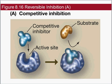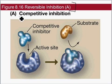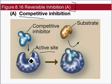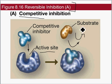For reversible inhibitions — ways to inhibit enzymes temporarily that can be reversed — the first type is competitive inhibition. It's called competitive because an inhibitor competes for the active site. If the inhibitor binds to the active site, the actual substrate cannot bind — it has been outcompeted. However, if there is more substrate available, the substrate will win the race and outcompete the inhibitor.